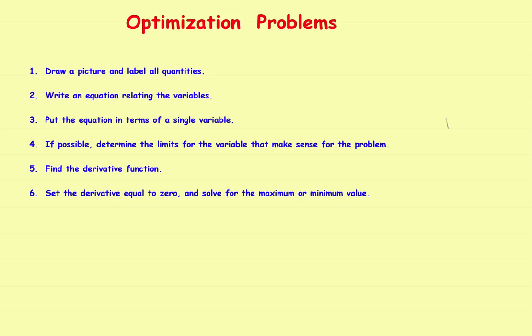For example, suppose an answer could not possibly be more than 200. If you got two answers — say 100 and 300 — you would know to throw the 300 out. The answer has to make sense for the particular problem. Step five: find the derivative. Step six: set the derivative equal to zero, which identifies where the maximum and minimums occur.